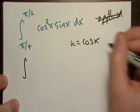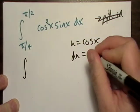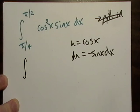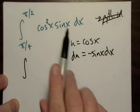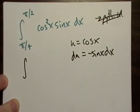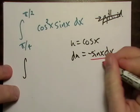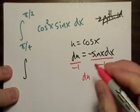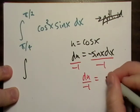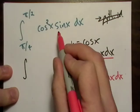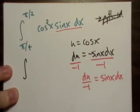I could let it equal cosine X, DU will equal negative sine X DX. Okay, so I'm already almost there. Now note up here, I've got a sine X DX, but I don't have a negative sine X DX. So I'm just going to divide both sides by negative one, and that's going to give me DU over negative one equals regular sine X DX. Okay, so I could replace that up there.